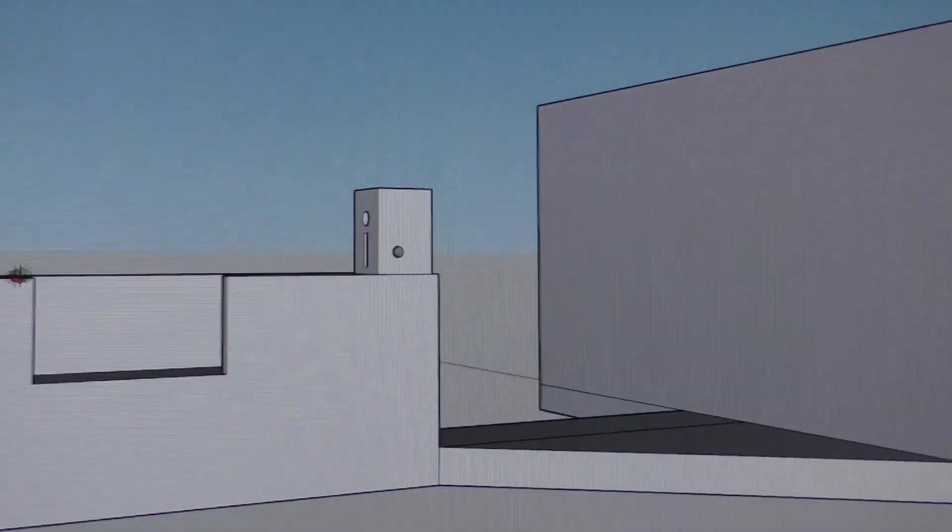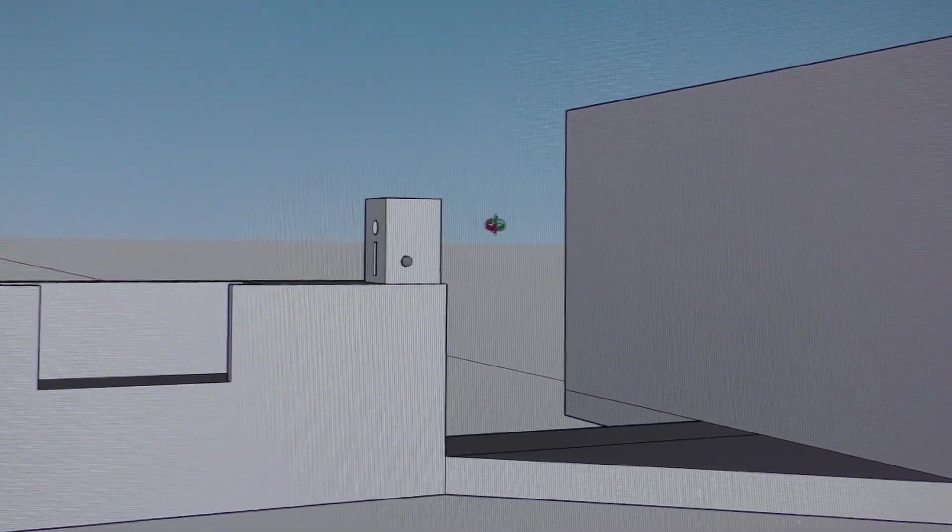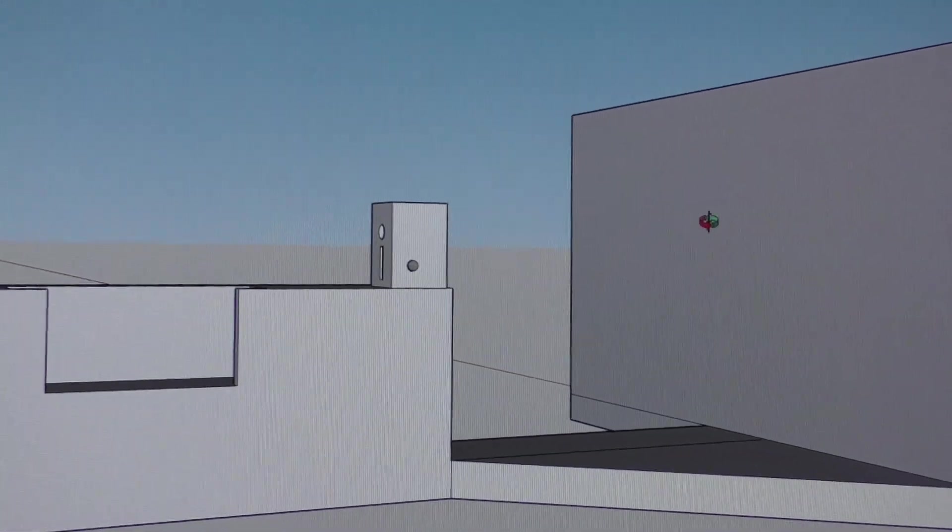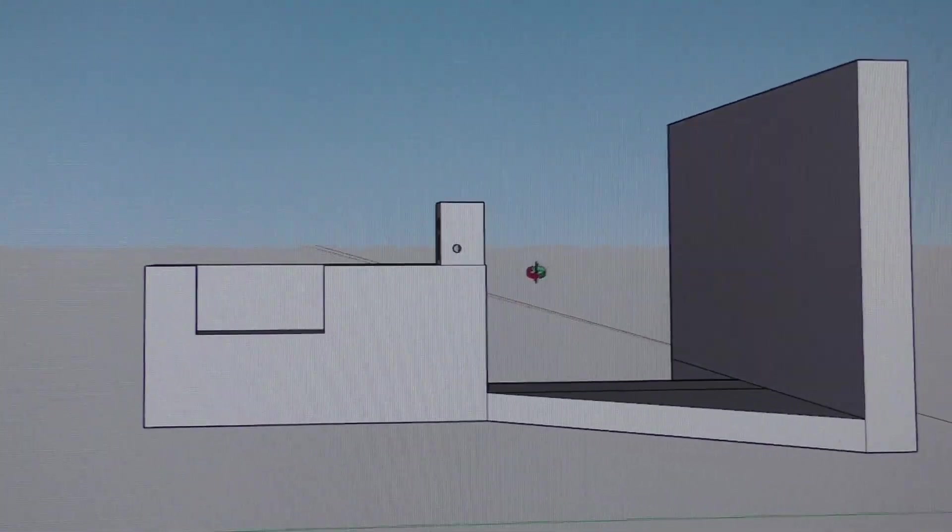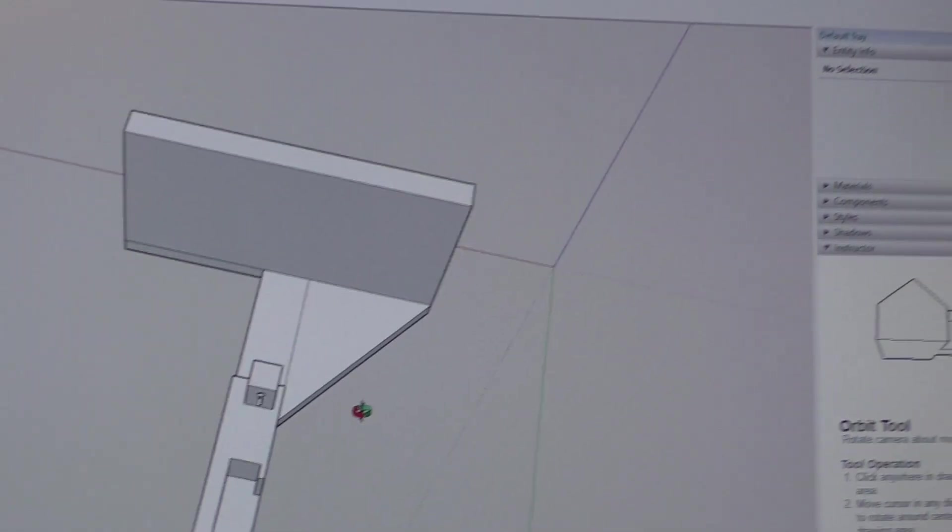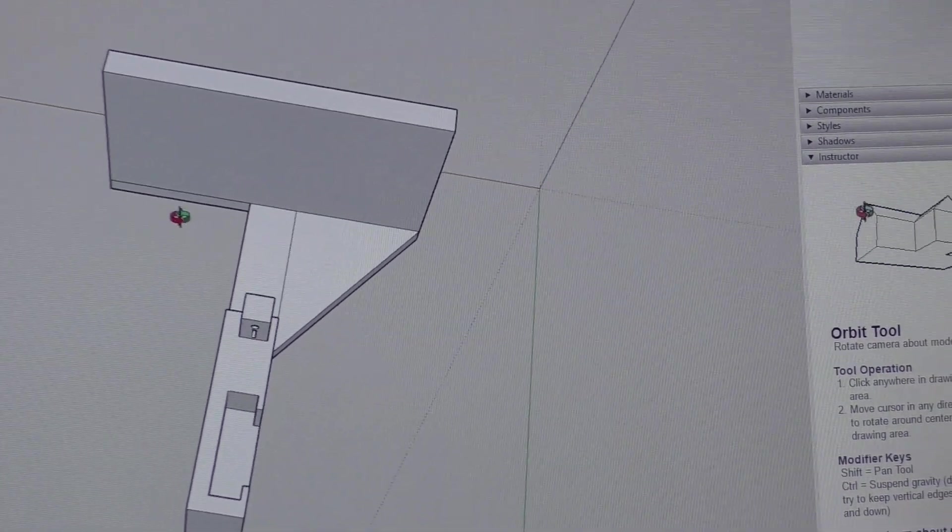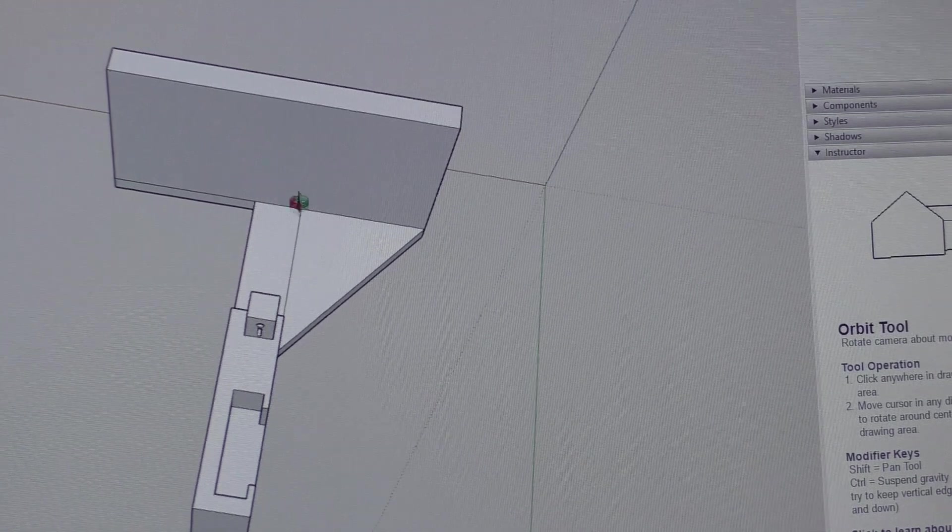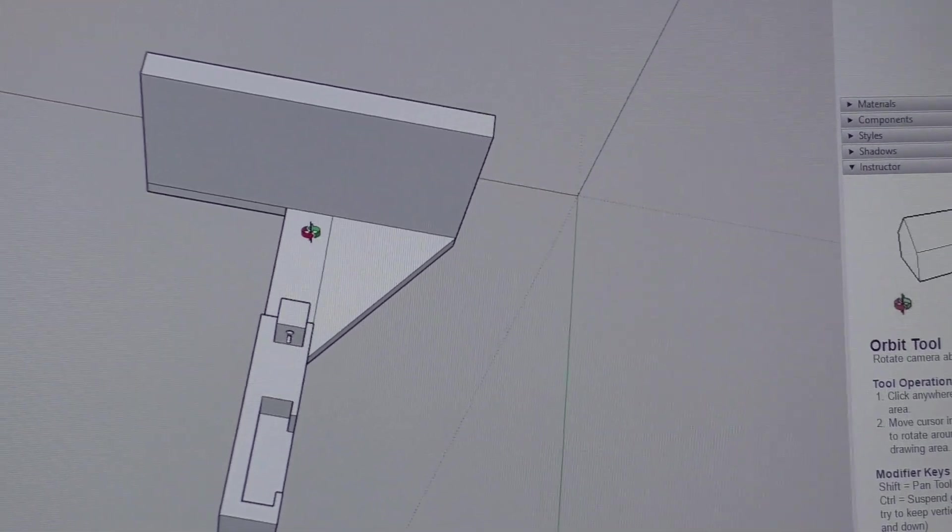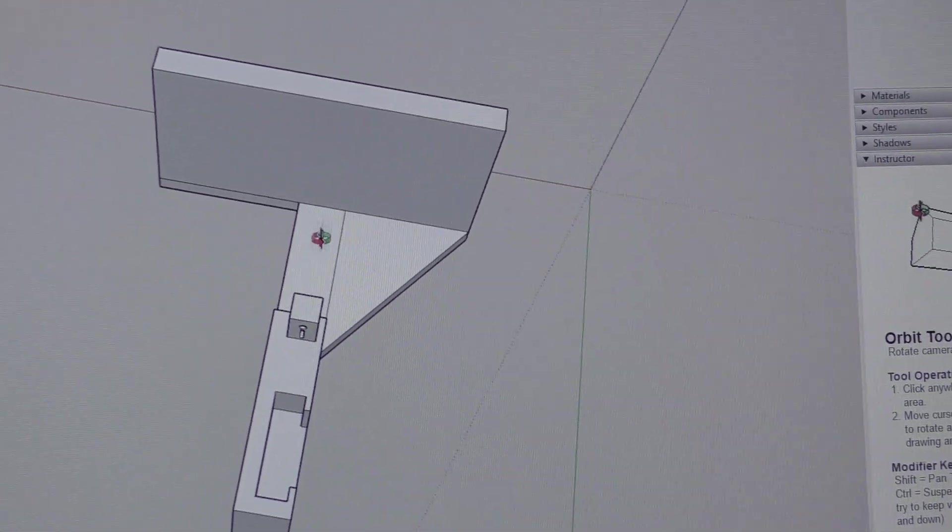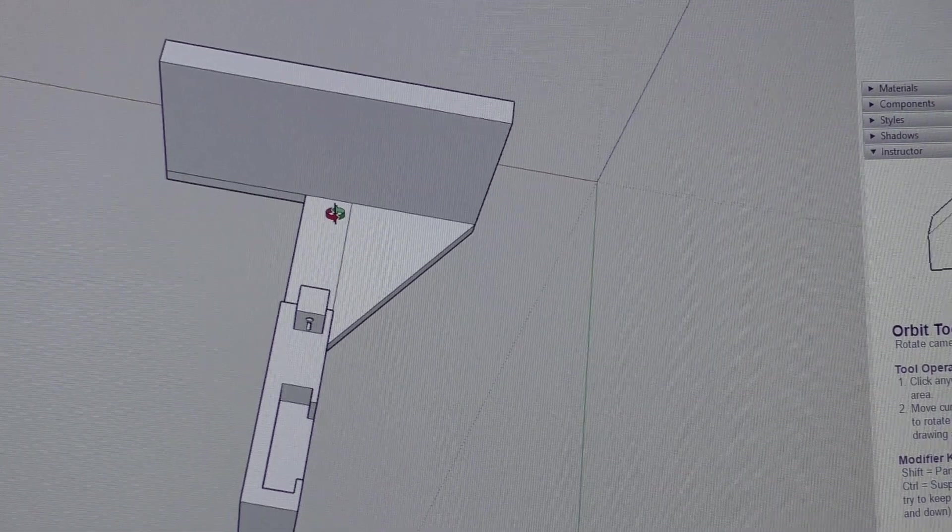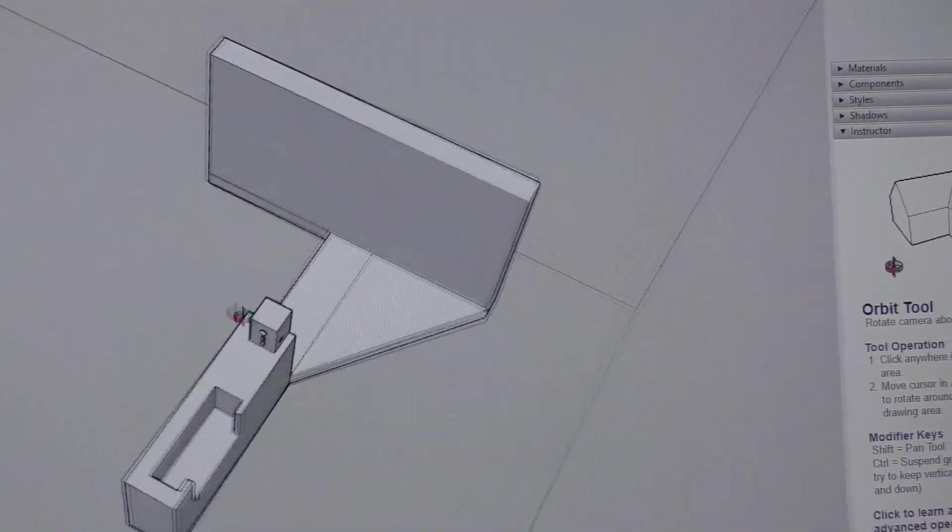And then what happens is the rod goes in here like this. The motor mounts over on this edge right in here. So the motor and the cam will move back and forth this way. Potentiometer's here with the rod here. As the cam moves back and forth the rod moves up and down and moves the potentiometer.